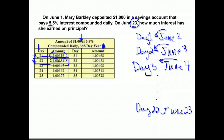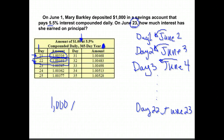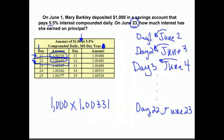On the 22nd day, it tells us to multiply by 1.00331. She put in $1,000, so we multiply $1,000 by 1.00331, and that will tell us how much is in the account on the 22nd day, which happens to be June 23rd.